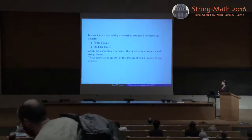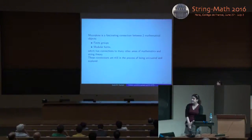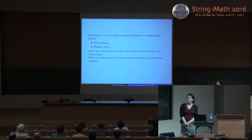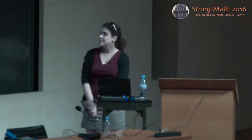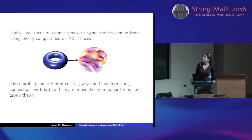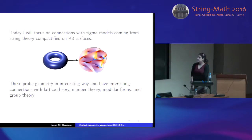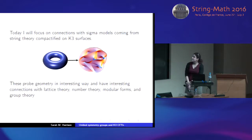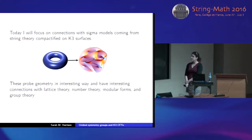The general broad motivation is the subject of moonshine, which is a very interesting connection between two mathematical objects: on the one hand finite groups, and on the other modular forms. As you'll see in the talk today, it has connections to many other areas of mathematics and string theory which are still being uncovered and explored. The particular context I'll be focusing on is string theory compactified on K3 surfaces, which has connections with the theory of lattices, number theory, modular forms, and group theory.